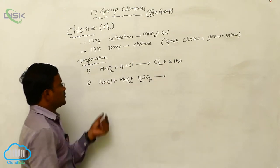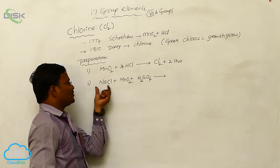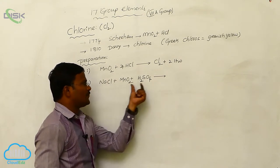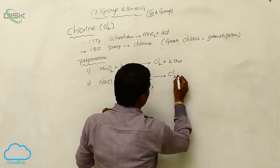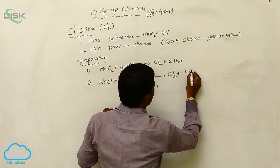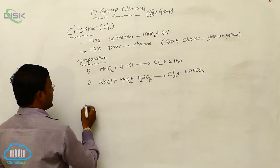The same manganese dioxide, but in addition to manganese dioxide, we are using sodium chloride, common salt, with concentrated sulfuric acid, which results in the formation of chlorine gas, with the formation of sodium bisulfate and manganese chloride.